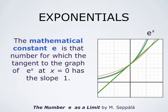The definition we introduced for the mathematical constant e was that it is that number for which the tangent to the graph of the exponential function e to the x at x equals 0 has slope 1. In this picture, the graph of e to the x is the green curve. The green line is the tangent line at x equals 0. The red and blue curves are graphs of functions a to the power x for a less than e and a larger than e.